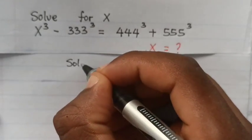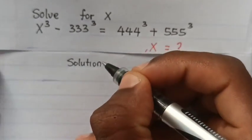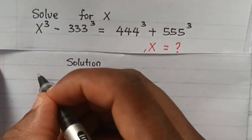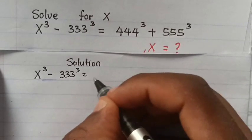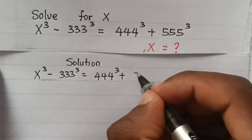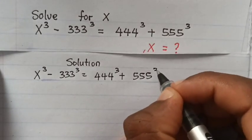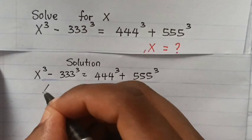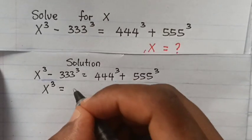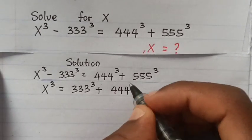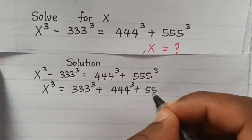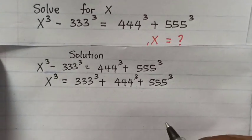How can we find the value of x from this cubic equation? Solution. x³ minus 333³ equals 444³ plus 555³. Make x³ on one side, so x³ equals 333³ plus 444³ plus 555³.